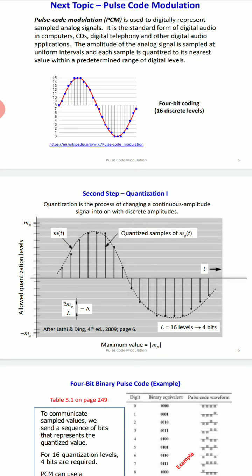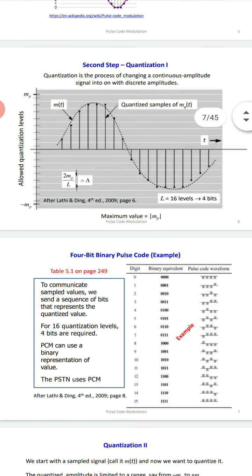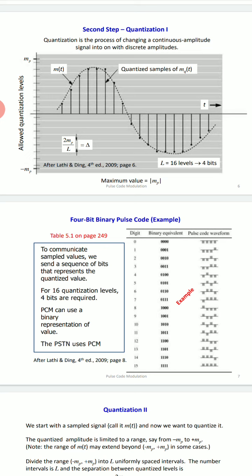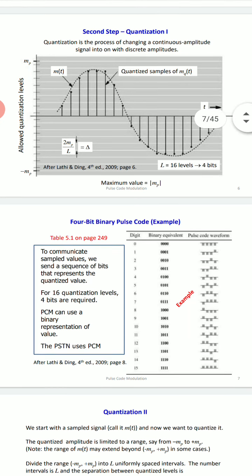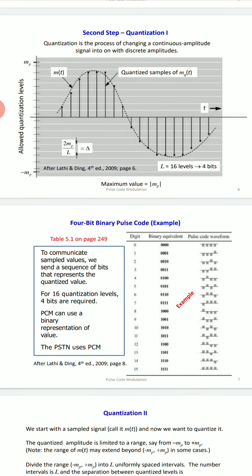Quantization is the process of changing a continuous amplitude signal into a discrete amplitude signal. The original signal m(t) is shown as a dotted line, and we change that continuous signal into discrete values. We select discrete places denoted by dark black dots, which we call the quantized sample mq(t) — the quantized sample of the original analog signal m(t).